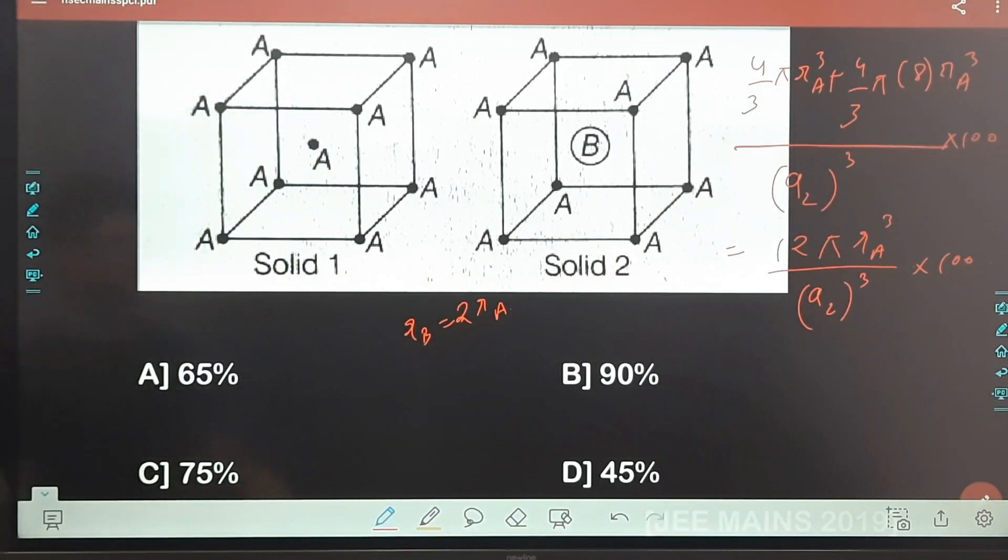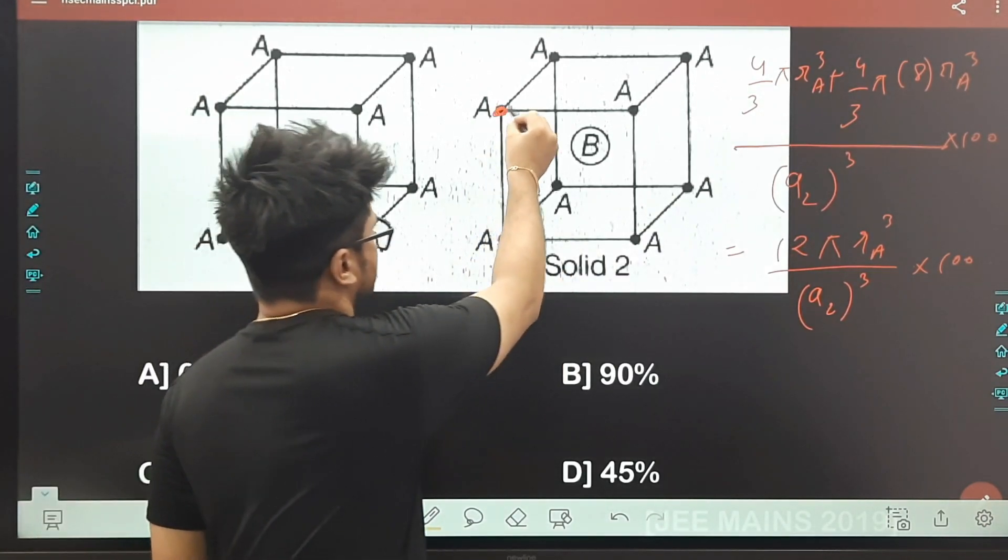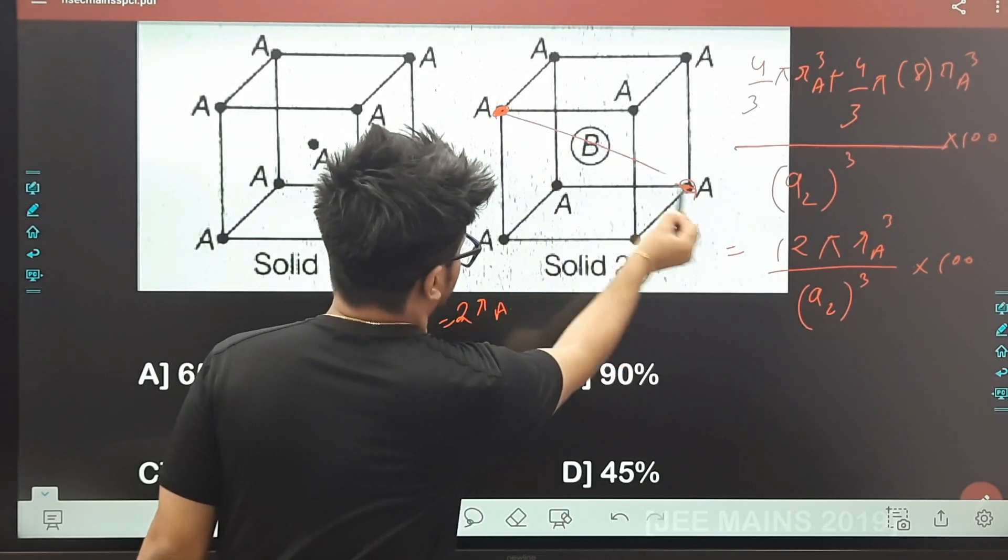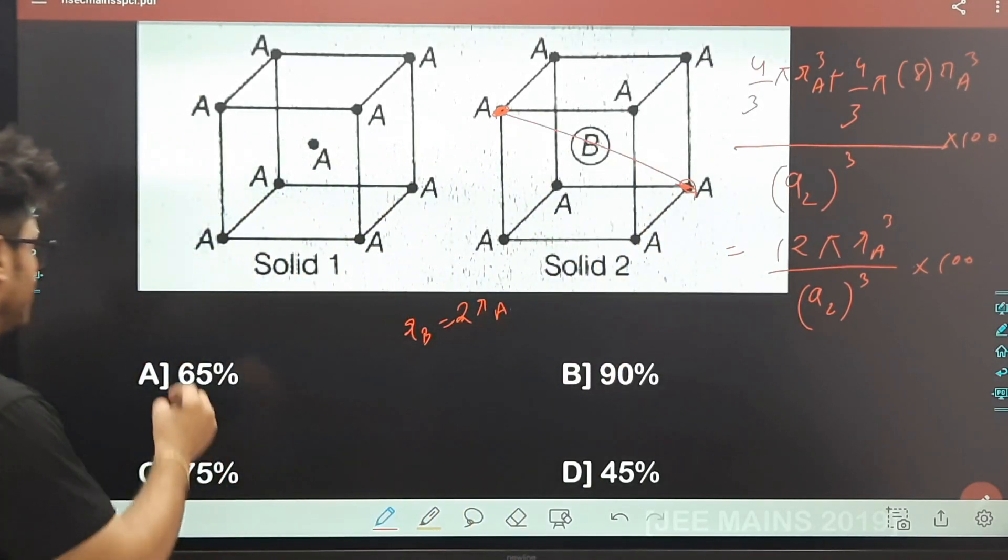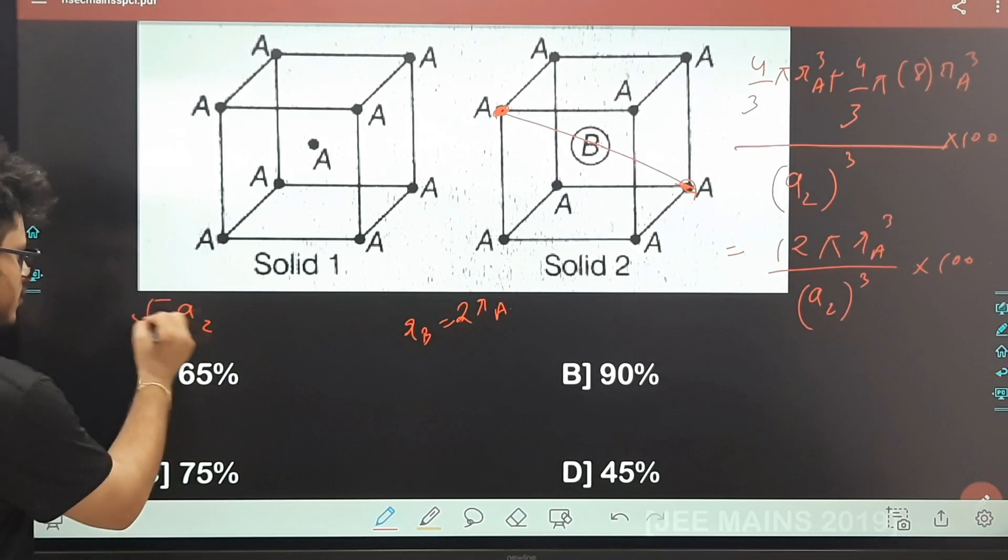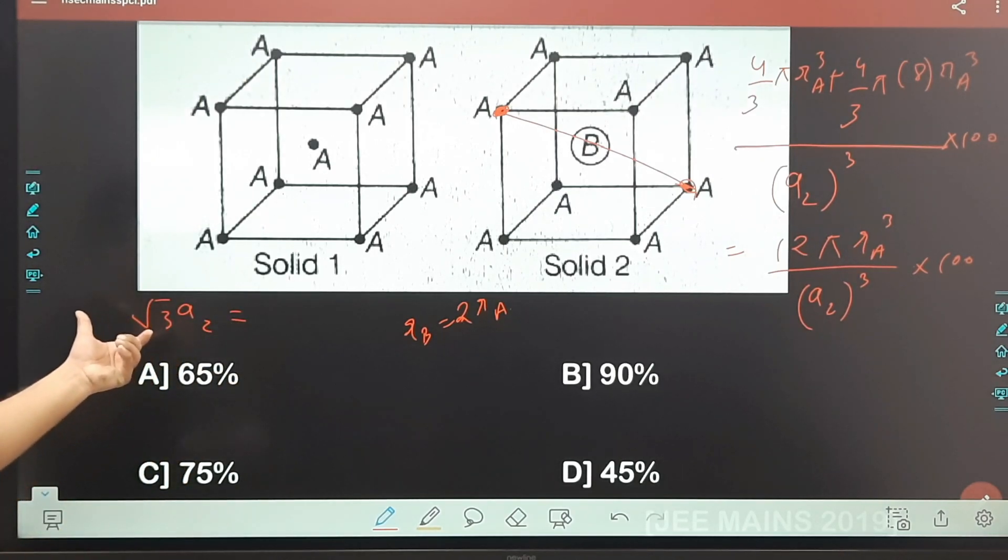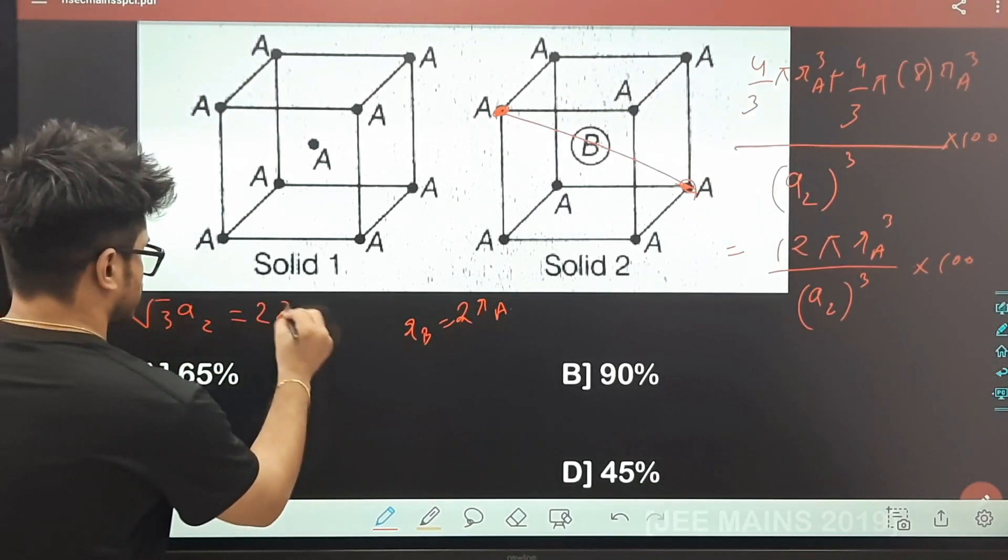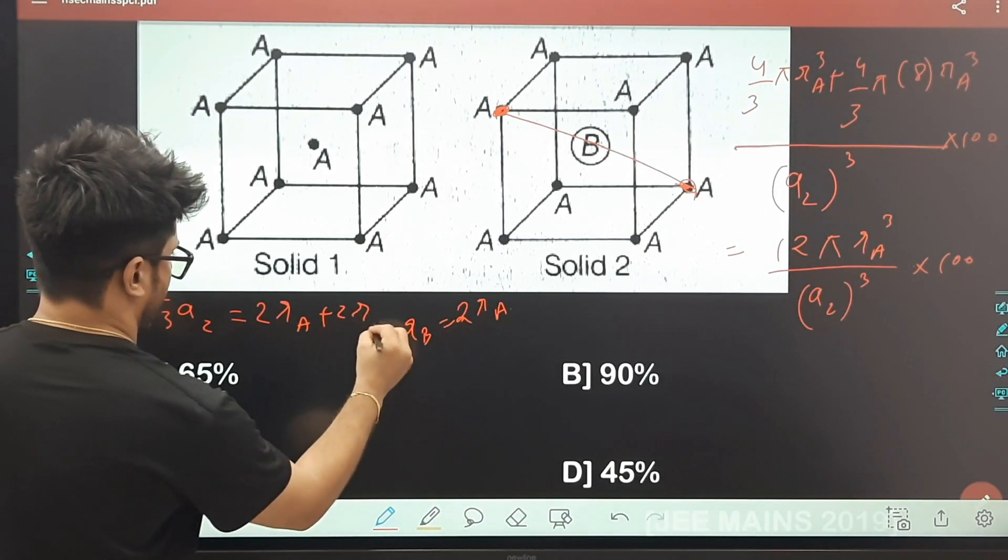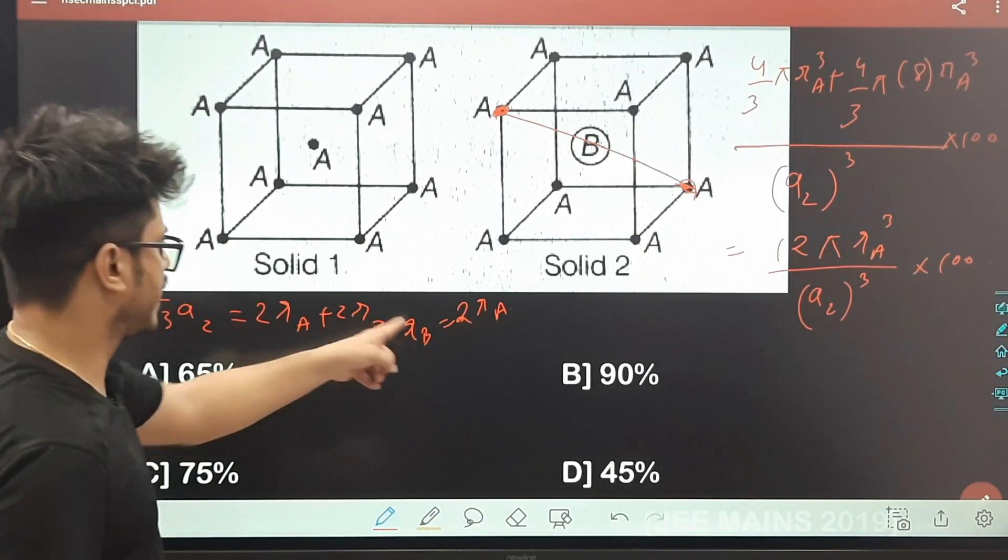Aap yahan pe dekhiye, iska body diagonal dekhiye. This is the body diagonal, which is a₂√3. It is equals to 2 times rₐ plus 2 times rᵦ, and rᵦ is again twice of rₐ, this will be 6rₐ.